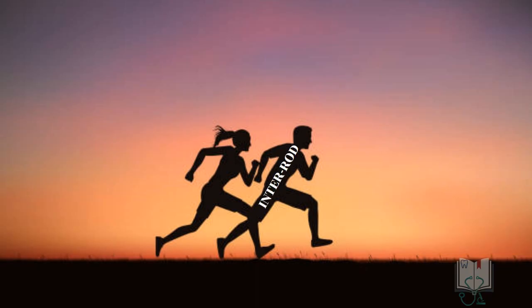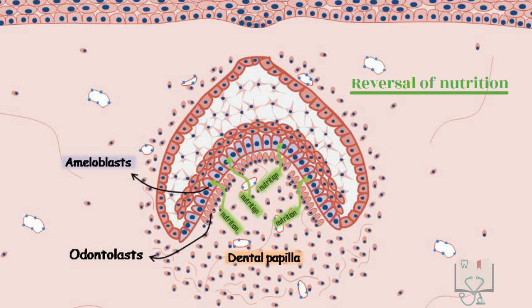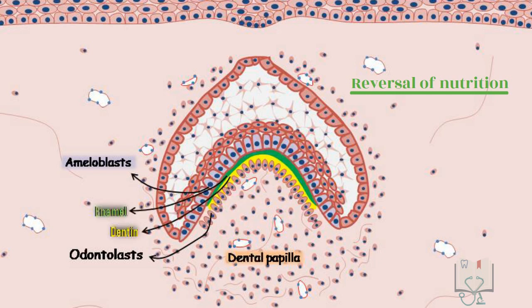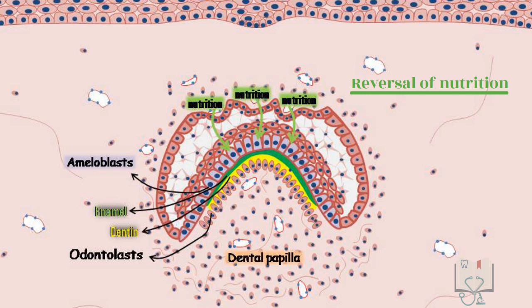The distal part of the tomes process produces the enamel rod, and the proximal part produces the interrod. The interrod formation is always a step ahead of rod formation. Apart from these changes, ameloblasts also undergo the reversal of nutrition. That is, until the organizing stage, the ameloblasts were getting nutrition from the dental papilla. But once the formative stage begins and enamel-dentine deposition starts, this source of nutrition gets blocked. The new source of nutrition is the dental sac adjacent to the outer enamel epithelium.